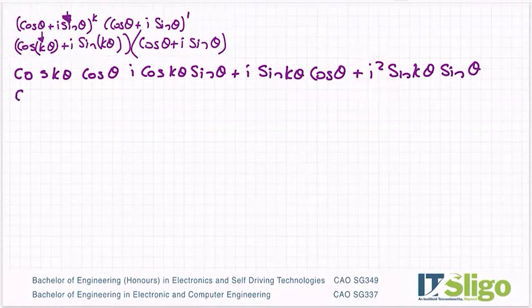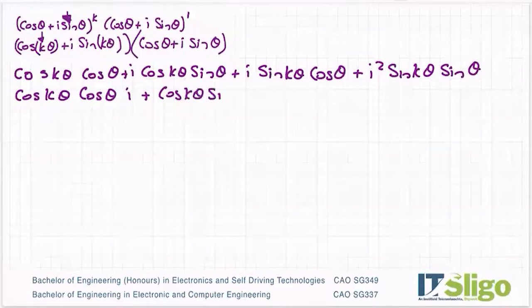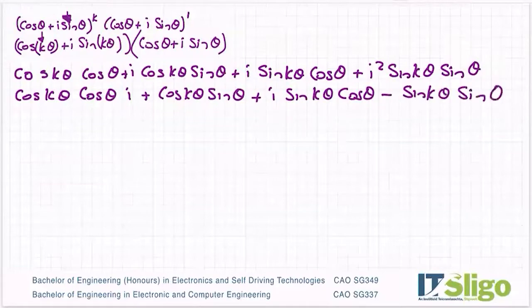Let's get rid of the i squared. So cos k theta cos theta plus i cos k theta sin theta plus i sine k theta cos theta minus sin k theta sin theta. So what I did there was just sub in the minus one for that. And of course, the net effect is that you'll have a plus by a minus one there, which is just this minus.